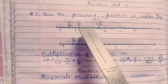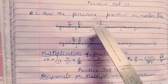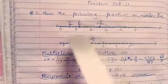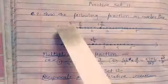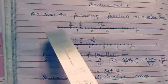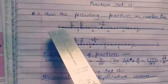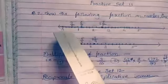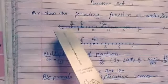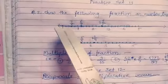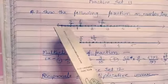Continuing: 1, 2, 3, 4, 5 — this is 3. Now for 3 upon 5, count from 0: 1, 2, 3 — that is 3 upon 5. Darken it. So, this point is 3 upon 5.